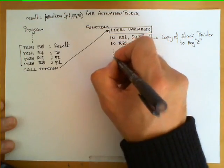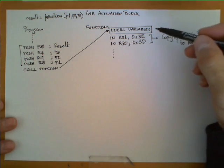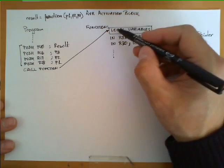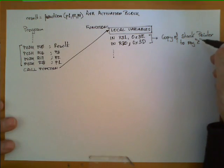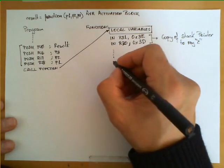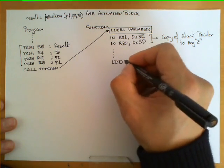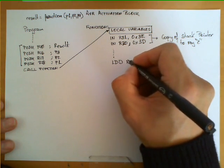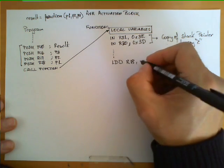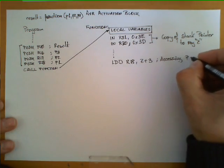After that, we carry on with the instructions of the subroutine. The important observation is that we are going to assume local variables are not needed — we won't reserve any additional space there. We place a copy of the stack pointer in register Z. Now, for example, LDD R18, Z+3 would be accessing P1.